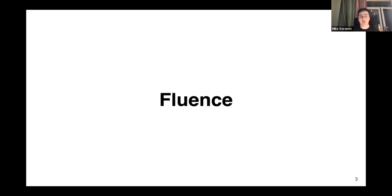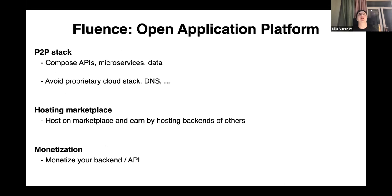Let's start with Fluence. Actually Fluence is what we call an open application platform. This open application platform includes several things. The first one is a peer-to-peer stack. This P2P stack allows you to compose some APIs — APIs of microservices, data, and so on — and also it's a way of using some protocol stack, DNS, and so on.